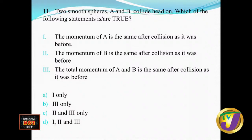Number eleven: two smooth spheres A and B collide head-on. Which statements are true? 'Momentum of A is the same after the collision as before' — you cannot determine that by just reading that, because momentum depends on mass and velocity, and you can't know what happens by looking at one object alone. Similarly for momentum of B alone. So one and two are out. You're left with: the total momentum of A and B is the same after the collision as before. If you remember the conservation of linear momentum principle, you know this is true. So the only answer is three alone.